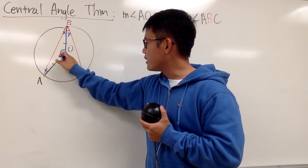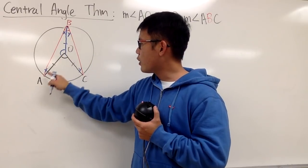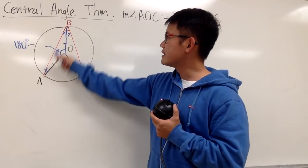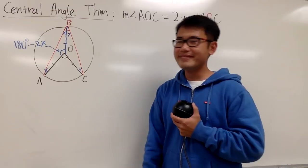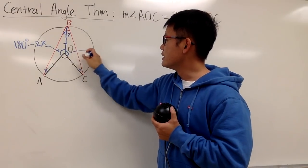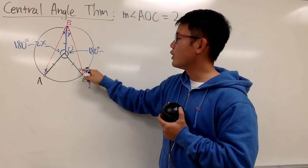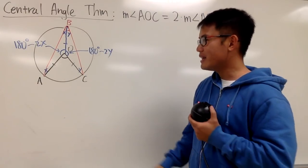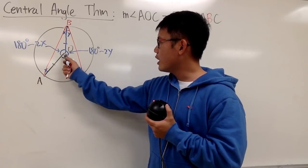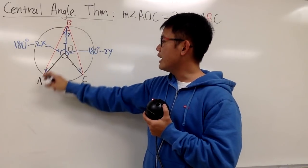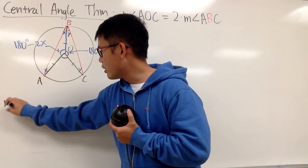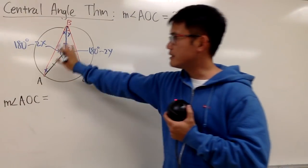Now, looking at the left triangle, angle AOB has to be 180 degrees minus x minus x, which is 180 minus 2x. Similarly, angle BOC has to be 180 degrees minus y minus y, which is 180 minus 2y. Now we make the connection: angle ABC is just x plus y.